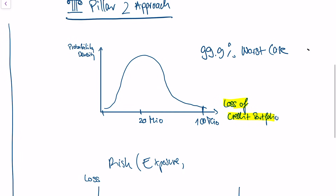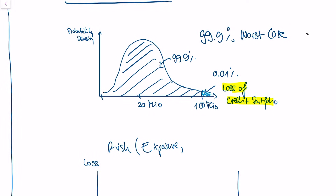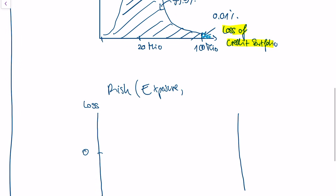Within the Pillar 2 approach, you try to understand what the loss is in a 99.9% worst case. You calculate this probability density function and then take the integral to obtain the 99.9% worst case. The area under the graph should be 99.9%, and the worst case area should be 0.01%. The question really is: how do I obtain this probability density function? Because taking the integral is easy — every computer can do that — but obtaining the probability density function is what the result ultimately depends on.